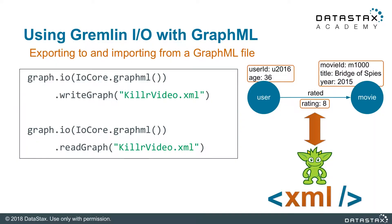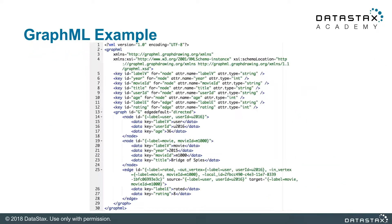Here's an example of using Gremlin IO with GraphML format. The syntax is fairly straightforward: we call the GraphIO method and specify that we're working with GraphML. We then use the WriteGraph method to export an existing graph, and the ReadGraph method when importing a graph from a supported file. Here's an example of what a GraphML file looks like for two nodes and one edge.